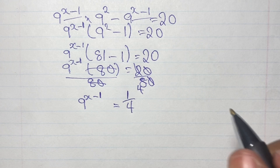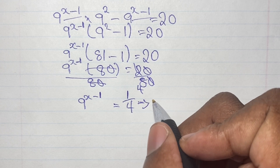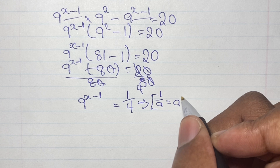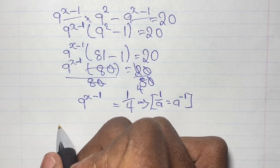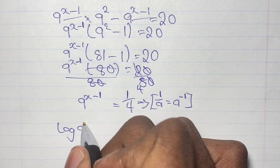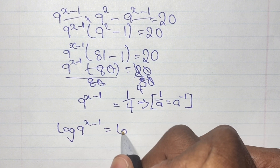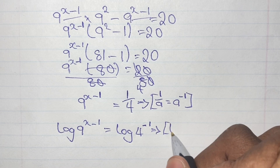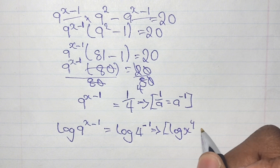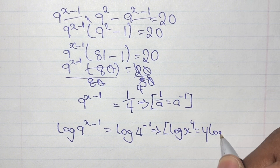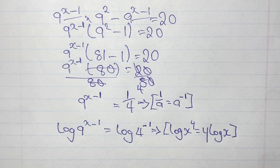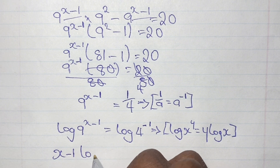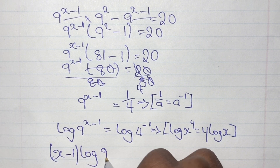Using the index law, 1 over a equals a to the power of negative 1. From here we use logarithms to solve for x. Our equation becomes log of 9 to the power of x minus 1, equals log of 4 to the power of negative 1. Applying the logarithm rule log(x^y) = y·log(x), we get x minus 1 times log 9, equals negative 1 times log 4.